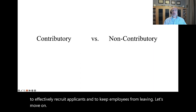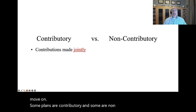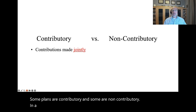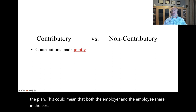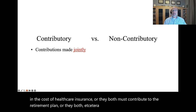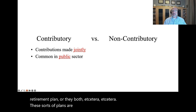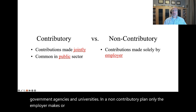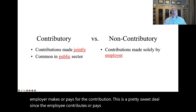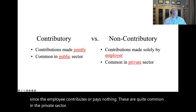Some plans are contributory and some are non-contributory. In a contributory plan, both the employer and the employee contribute to the plan — this could mean sharing the cost of health care insurance or both contributing to a retirement plan. These sorts of plans are quite common in the public sector, like government agencies and universities. In a non-contributory plan, only the employer makes or pays for the contribution — a pretty sweet deal since the employee pays nothing — and these are quite common in the private sector.